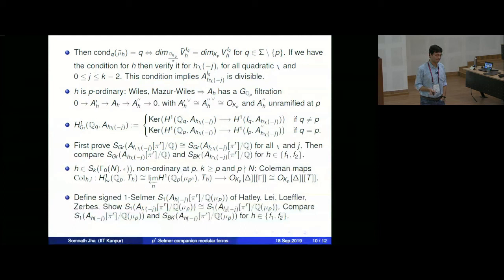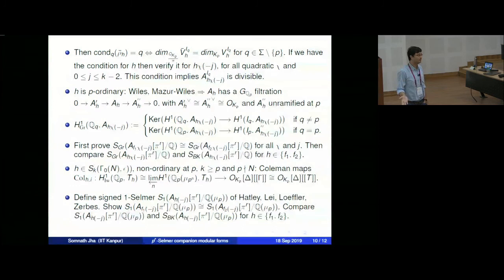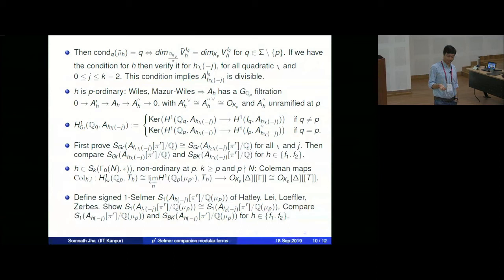We prove the isomorphism of Bloch-Kato Selmer groups over Q(μ_p): the Bloch-Kato Selmer group of A_{f_1}(−j)[π^r] over Q(μ_p) is isomorphic to that of A_{f_2}(−j)[π^r] over Q(μ_p). Then from Q(μ_p) we can twist by a character even if it is ramified at p, once we are in the Bloch-Kato Selmer group. So we first prove this for Q(μ_p) with trivial quadratic character, then slowly come down to Q.